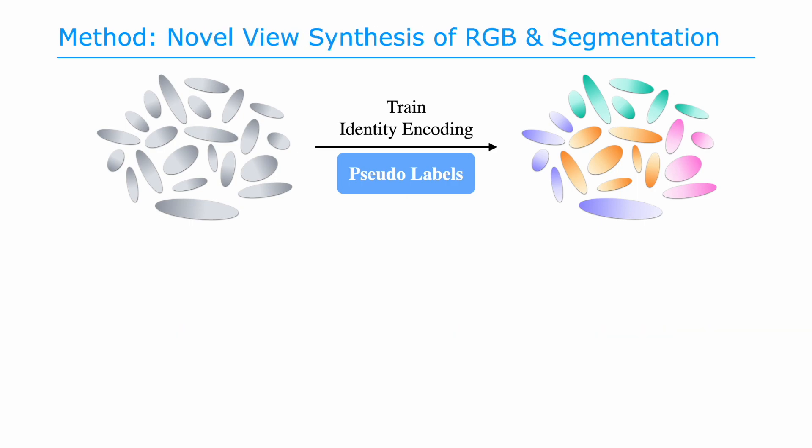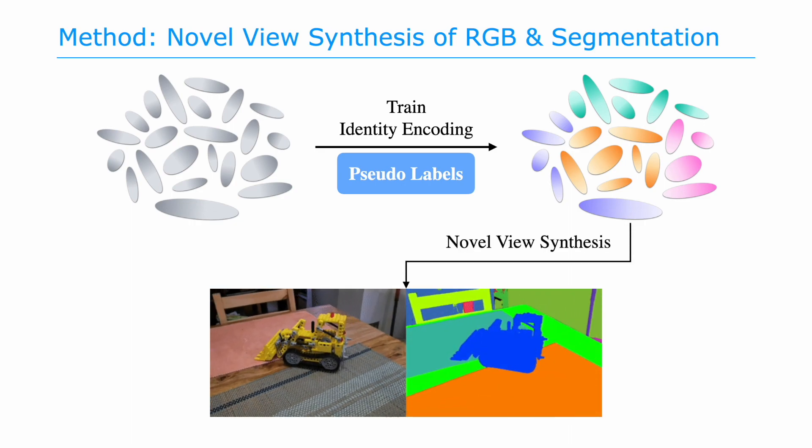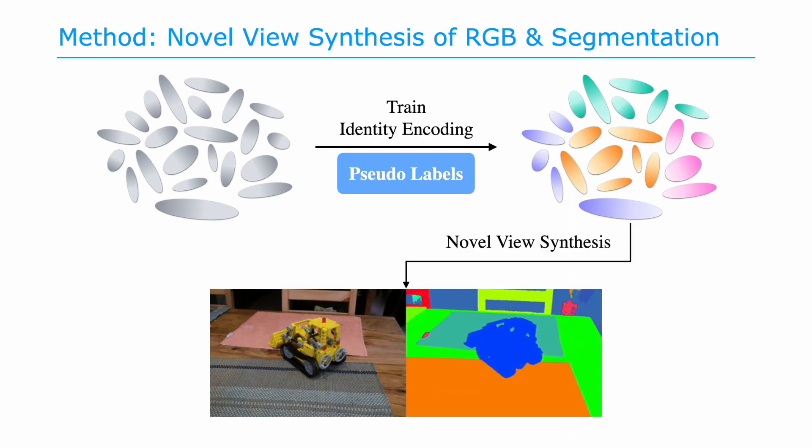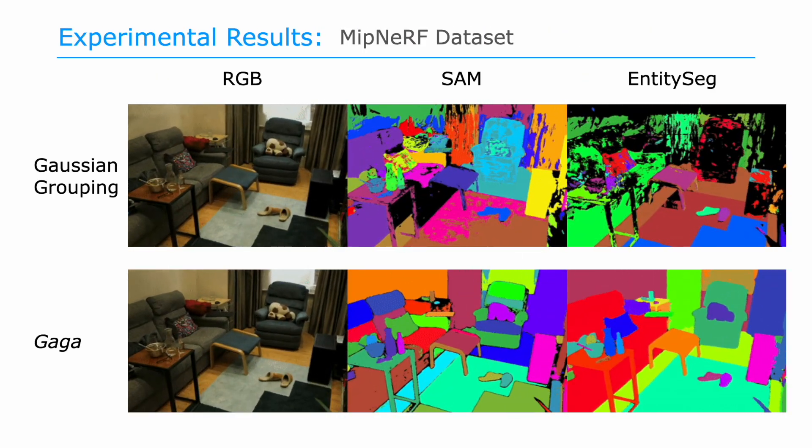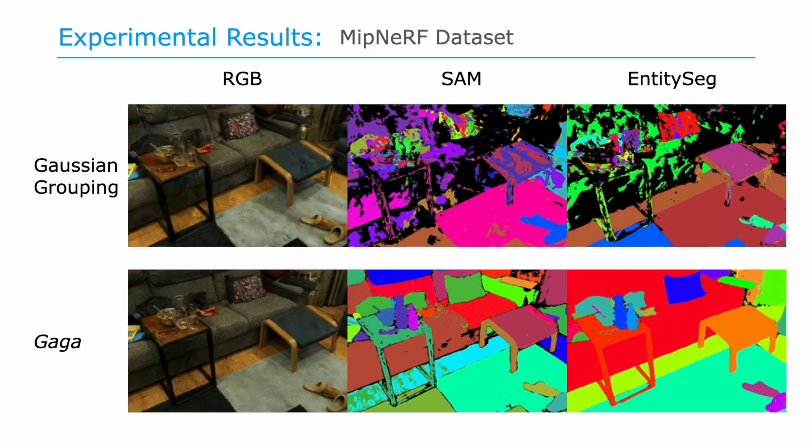Our segmentation-aware 3D Gaussians can then be readily used for novel view synthesis of RGB and segmentation. We show that Gaga incorporates well with different 2D segmentation methods, SAM and EntitySeg.